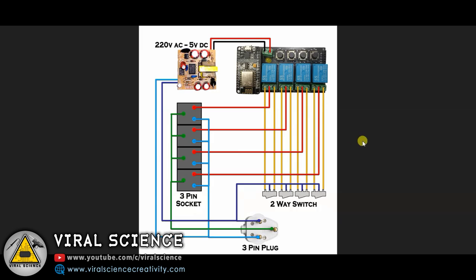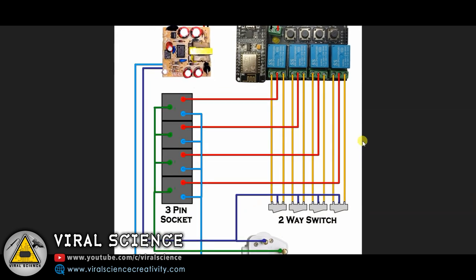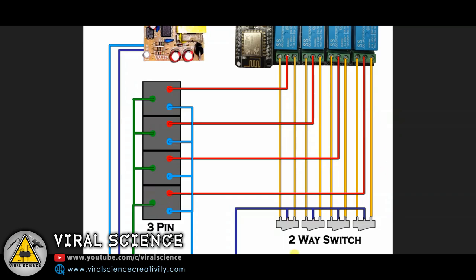So now we will see how this circuit works. So we will start with the relay module and this 2-way switch. Now every relay has 3-pin connections and every 2-way switch has 3-pin connections.